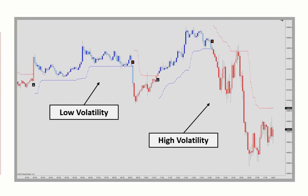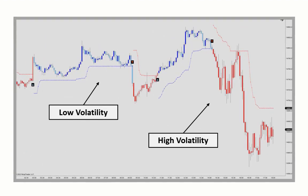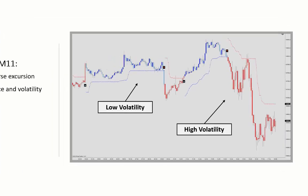With high volatility, you will have a trailing stop further removed from price, whereas with low volatility, the trailing stop moves closer to prices.